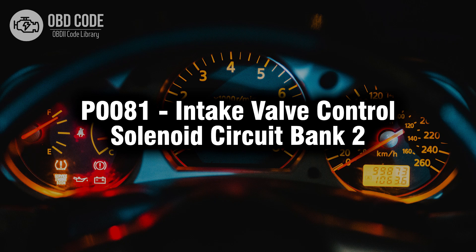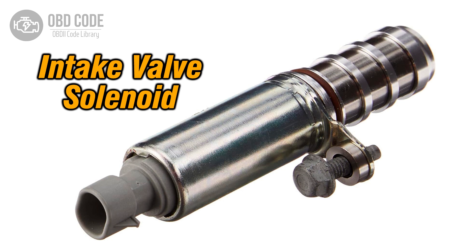Welcome. In this video we will talk about code P0081, its symptoms, causes and possible solutions. The P0081 trouble code indicates a problem within the intake valve control solenoid circuit of bank 2. This code typically points to issues with the control solenoid responsible for managing the intake valve in the second bank, affecting the engine's performance.